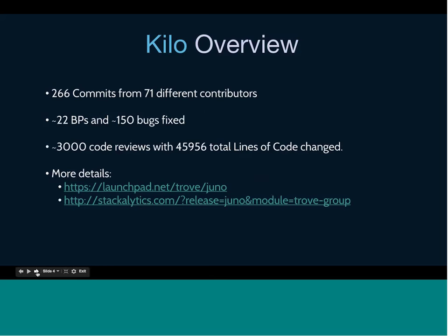To give you a quick overview of Kilo and how it went for us: we had a lot of commits in Kilo, about 270 commits from 71 different contributors from a lot of different companies. We closed out about 22 blueprints and fixed around 150 bugs. There were about 3,000 code reviews and 46,000 total lines of code changed. You can see all of the details on Launchpad and Stackalytics.